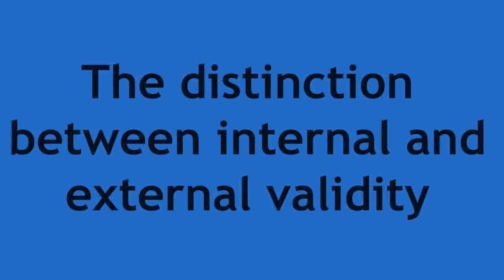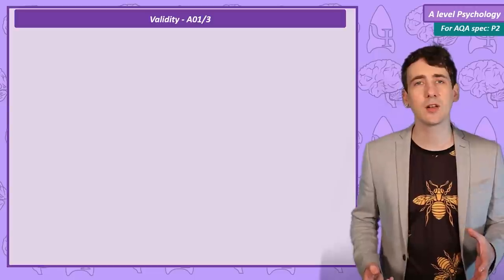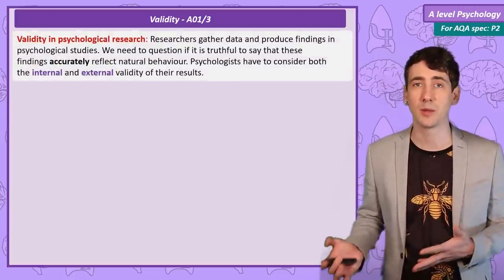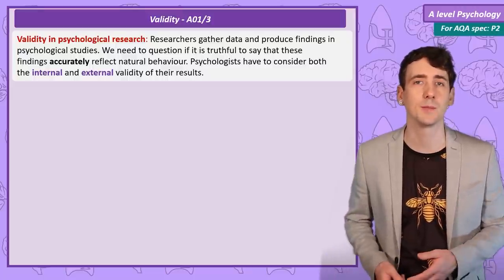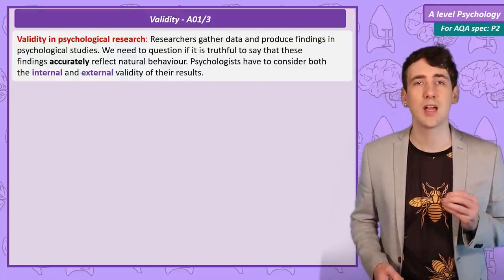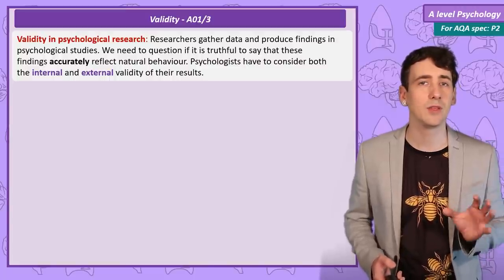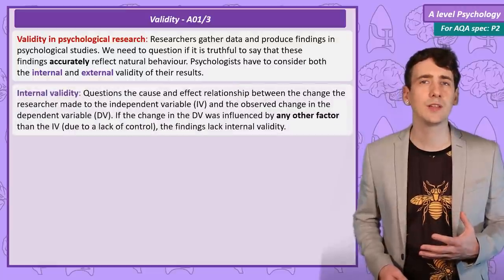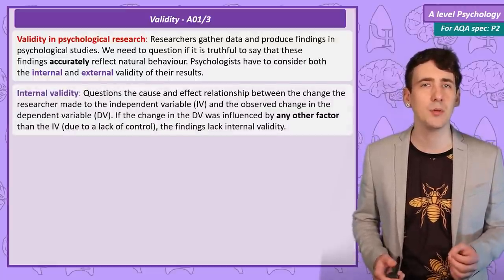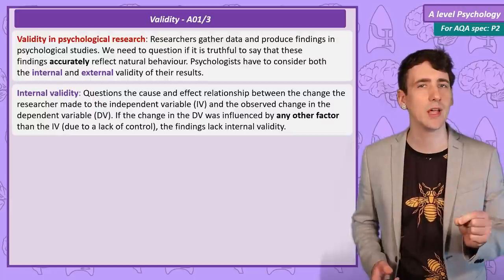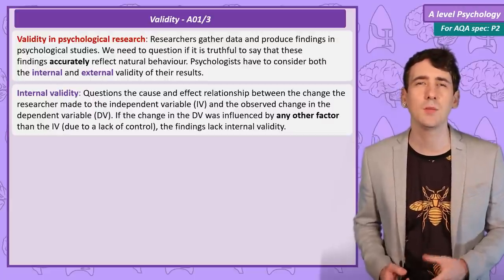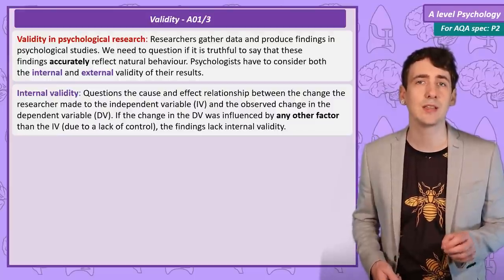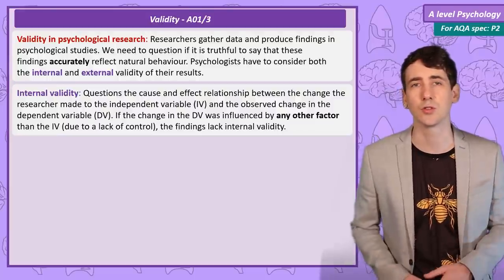Validity in psychological research is asking a question about the accuracy or truth of an observed effect that we have found through our experimentation, observation or investigation. When asking if a psychological finding genuinely describes behaviour, researchers consider both the internal validity and external validity of their findings. Questioning internal validity is asking if the change the researcher made in the independent variable was actually the factor that produced the observed change in the dependent variable, and not some third factor — so perhaps a confounding variable.